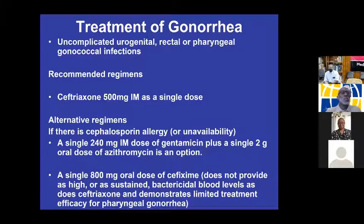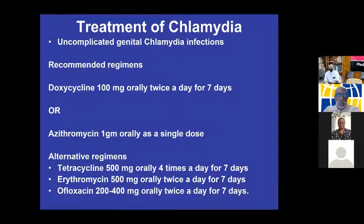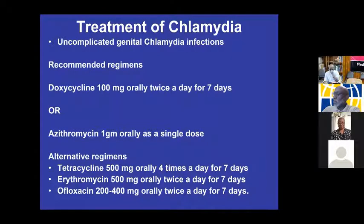Treatment of chlamydia: doxycycline 100 milligrams twice a day for seven days, or azithromycin as a single dose. The others are alternative regimens. We try to use doxycycline or azithromycin.